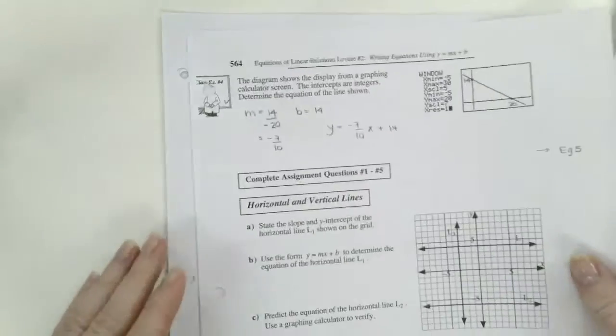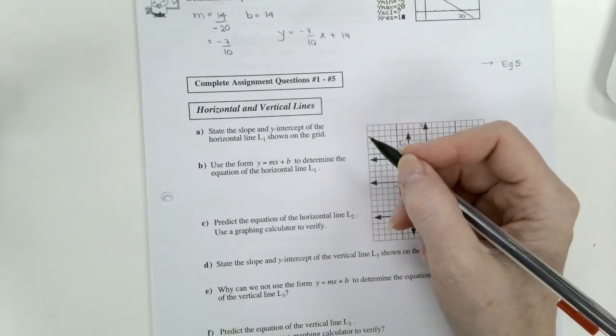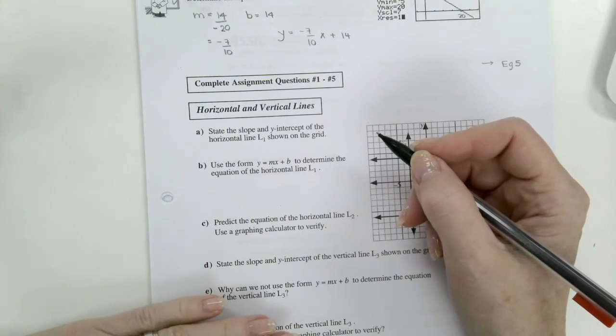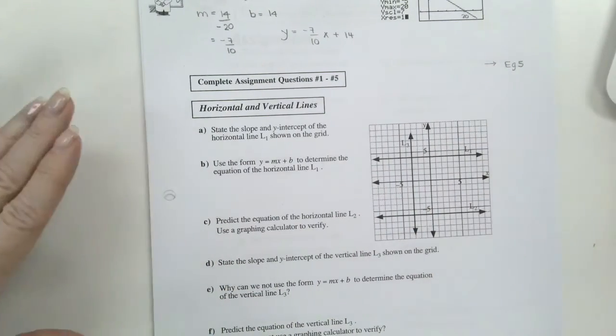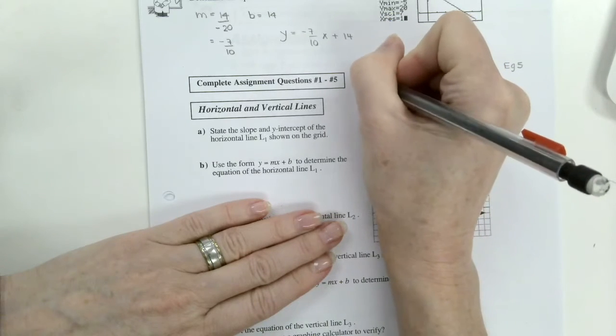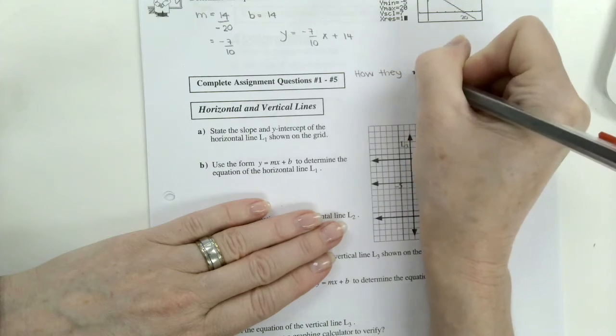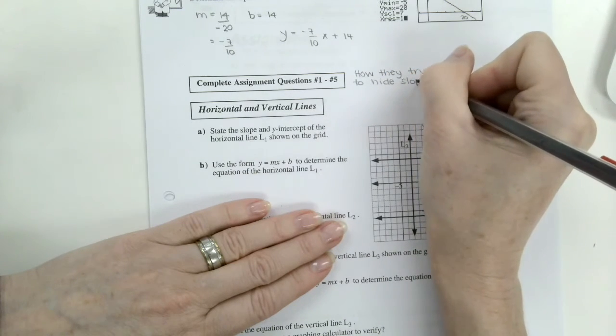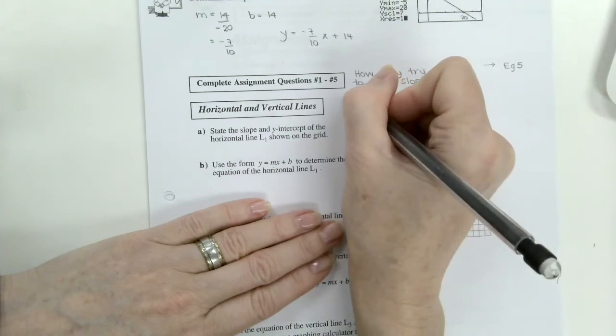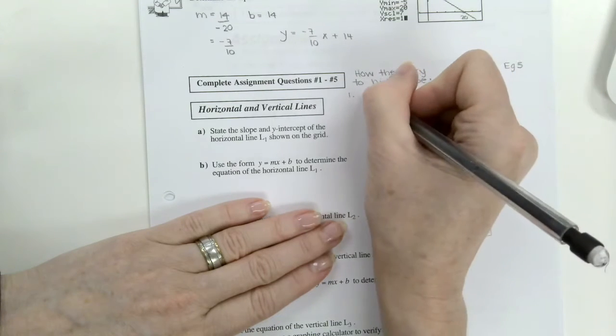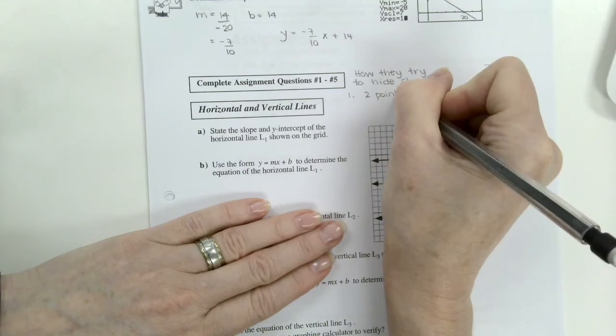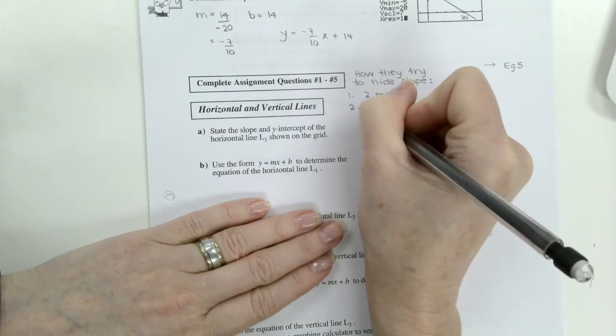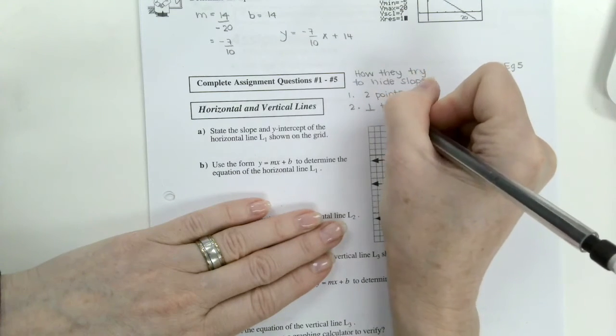Back we go. And we're just going to go back on this page. On this page, we are just going to use their space and not actually do the equation. So what we're going to write are some ways they try to hide the slope and the y-intercept. How they try, because you're going to find it, to hide slope. So one way that we've seen so far that they hide slope is if they give you two points. And you can find the slope using those two points.